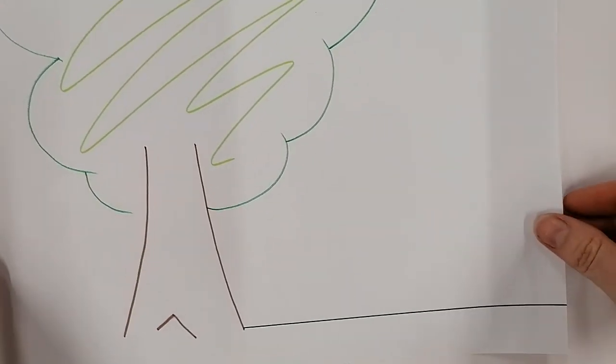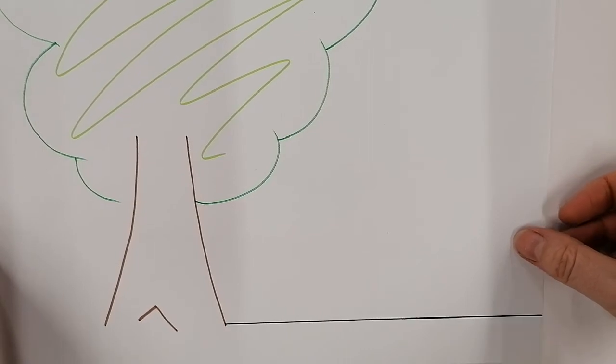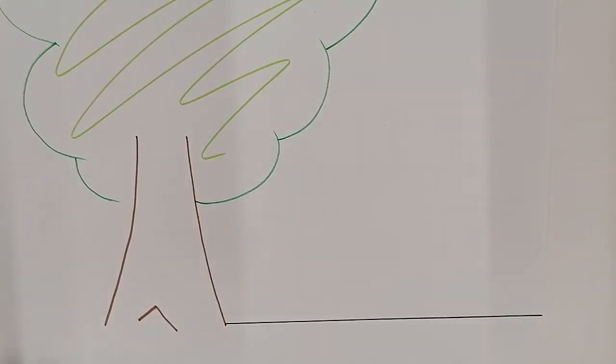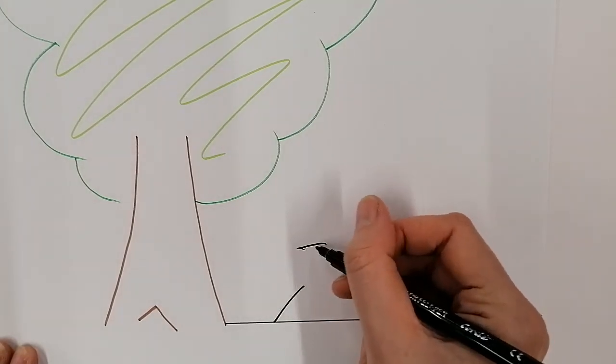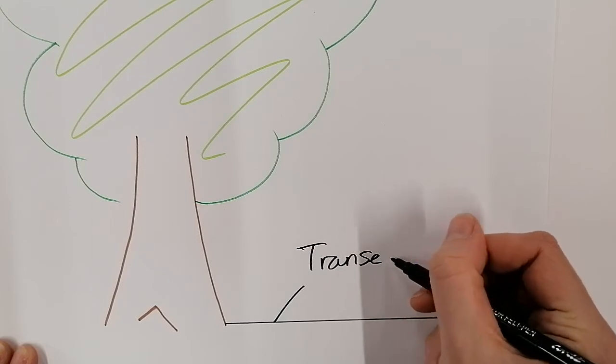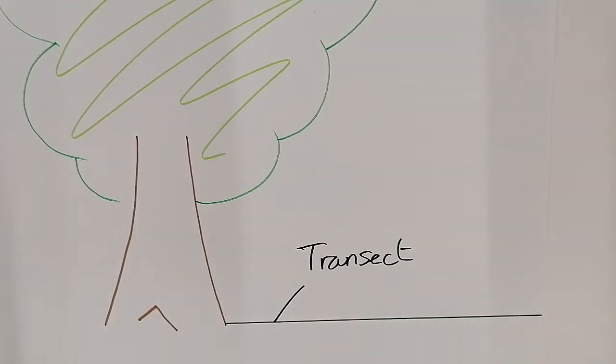A transect is always about how far away something happens. You probably have come across this sort of thing in your lessons. So you would have a feature—in this case we're looking at a tree—and then you have a tape measure going off into the distance, and it's the tape measure itself that is the transect.